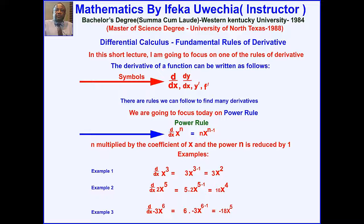How do we represent it? We can say that n is multiplied by the coefficient of x and the power n is reduced by 1.